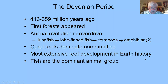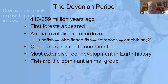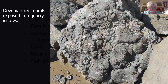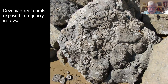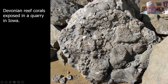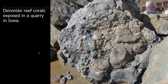Fish are the dominant animal group. Here's a picture from the Conklin Quarry or the Klang Quarry in Iowa showing the density - this is just a chunk of rock that got blown off and all of these are corals, as you can see on this piece of rock. It's really neat.